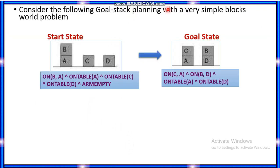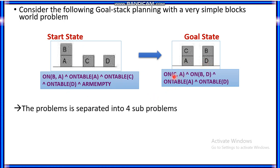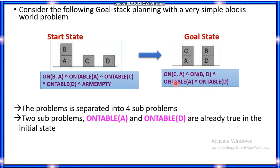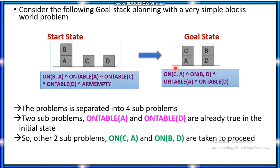Now we will see an example of goal stack planning with a simple blocks world problem. From the given start state — where the robot arm is empty — we have to reach the goal state: on(C, A), on(B, D), on-table(A), and on-table(D). The problem is separated into four sub-problems. Two sub-problems, on-table(A) and on-table(D), are already true in the initial state. So we only need to concentrate on the two remaining sub-goals: on(C, A) and on(B, D).